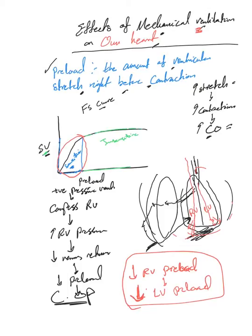So it's easy to remember: mechanical ventilation, positive pressure ventilation, leads to increase in intrathoracic pressure, compresses RV, increases RV pressure, decreases venous return, decreases RV preload, and by default automatically decreases LV preload.